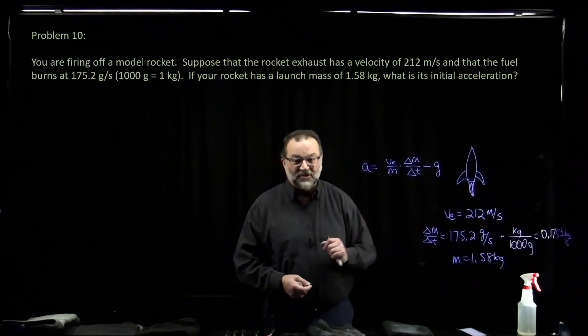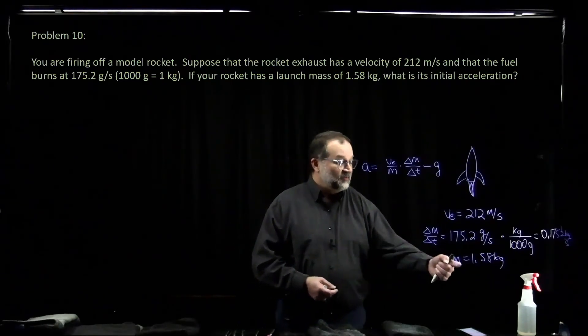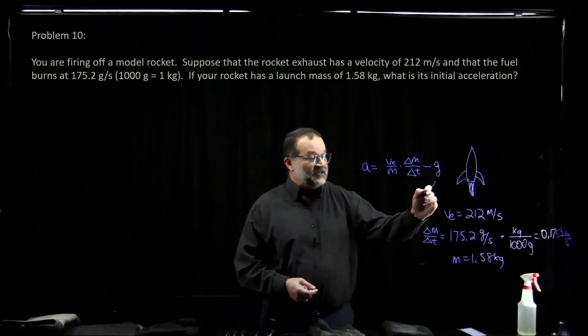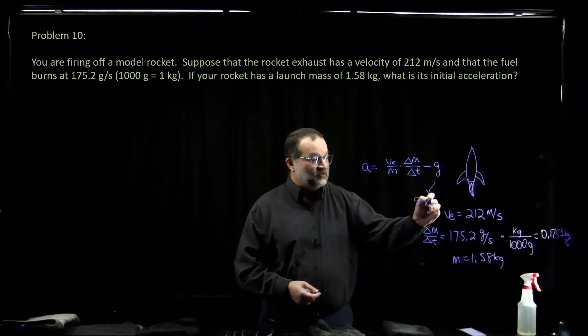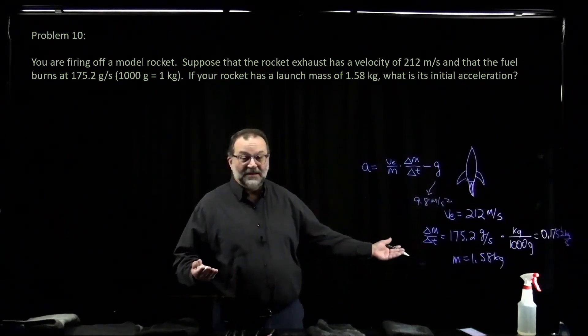So we know the exhaust velocity. We know dm dt, delta M, delta T. We know the mass that we launch with, and we know g is 9.8 meters per second squared. Now we have everything that we need for this equation.